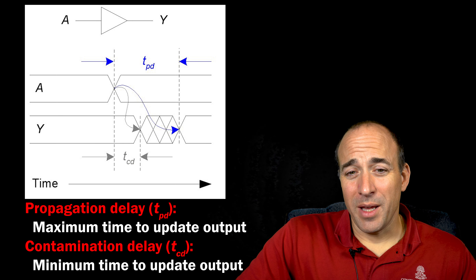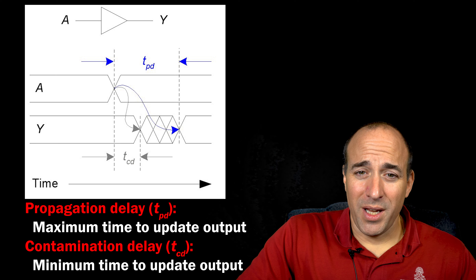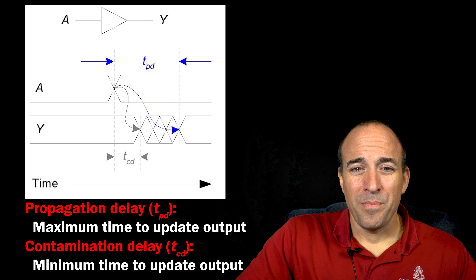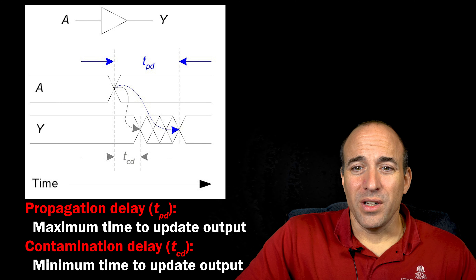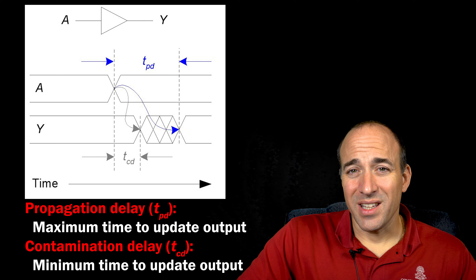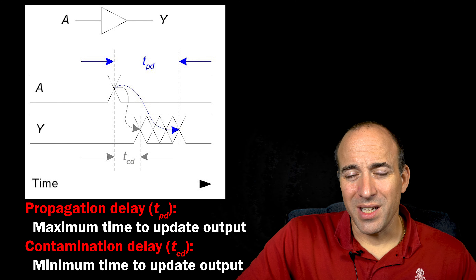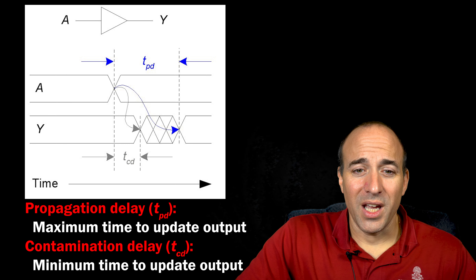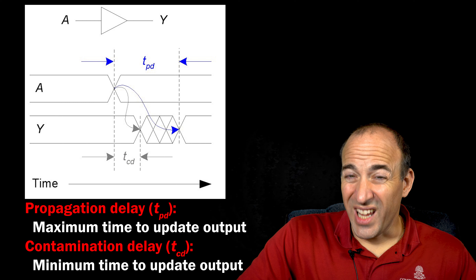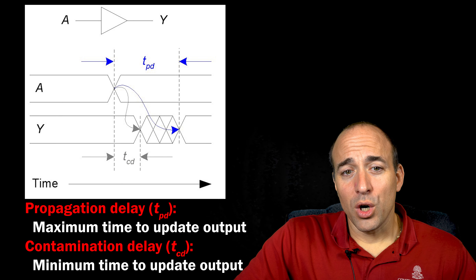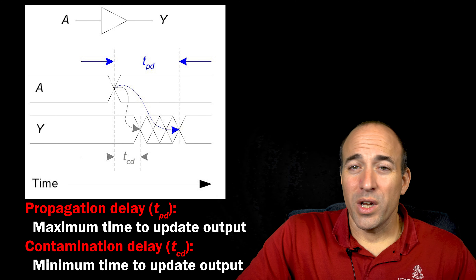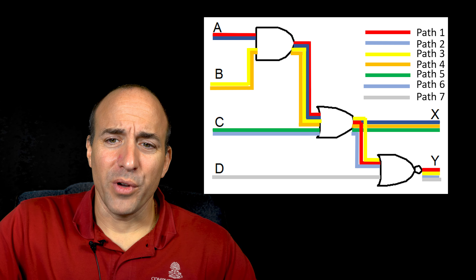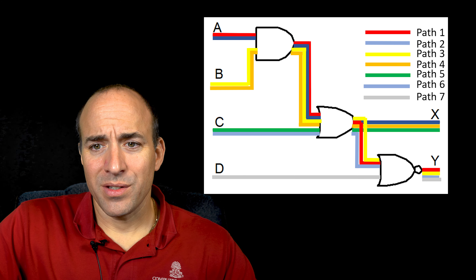The difference in time between the propagation delay — the latest a gate output may change — versus the contamination delay — the soonest a gate's output may change — is caused by various factors: differences in the rising and falling delay, which is generally caused by differences in the P-type and N-type transistors in CMOS design, variations in where different inputs and outputs connect within the internal structure of a gate, and sometimes the speed of the gate changes according to the environmental temperature.